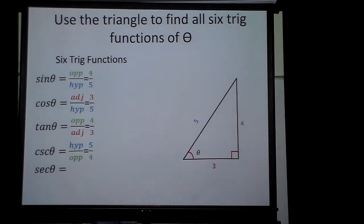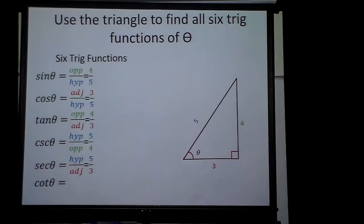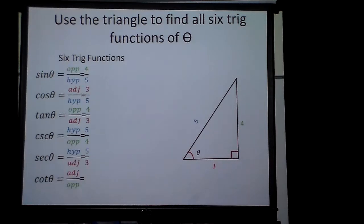Secant's going to be the cosine flipped, so it would be 5 thirds. And the last one, cotangent. Adjacent over the opposite is going to be 3 fourths. That's just using it to find the six trig functions, how to use all of them.